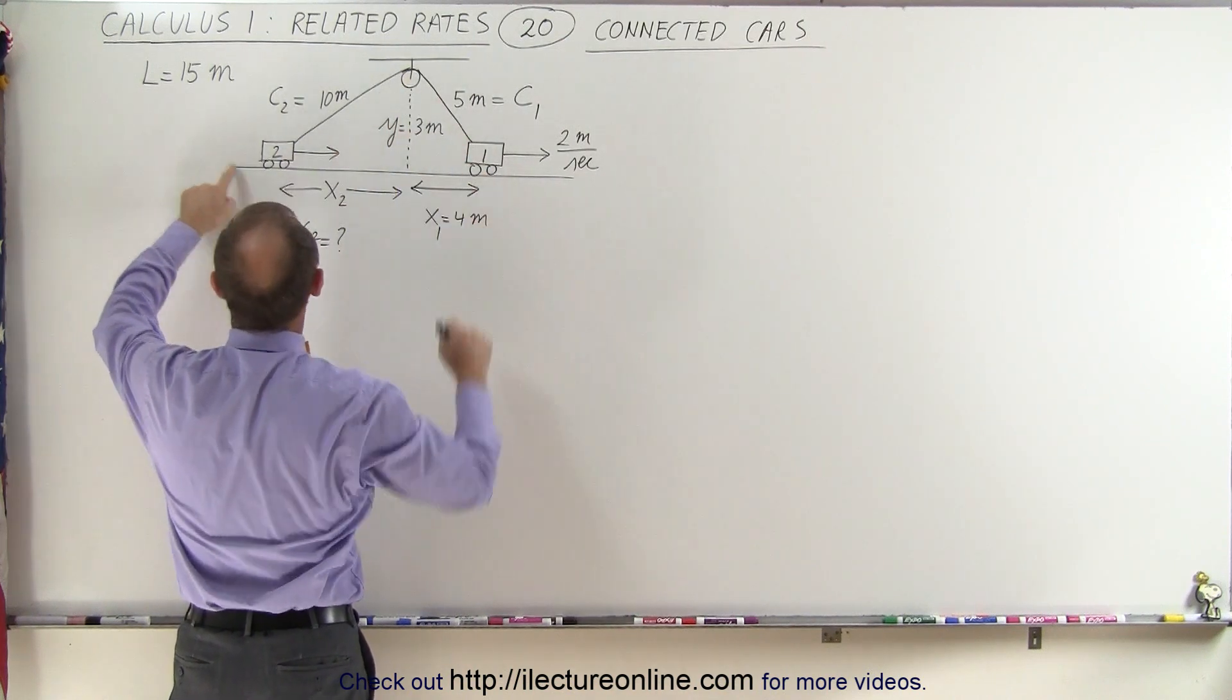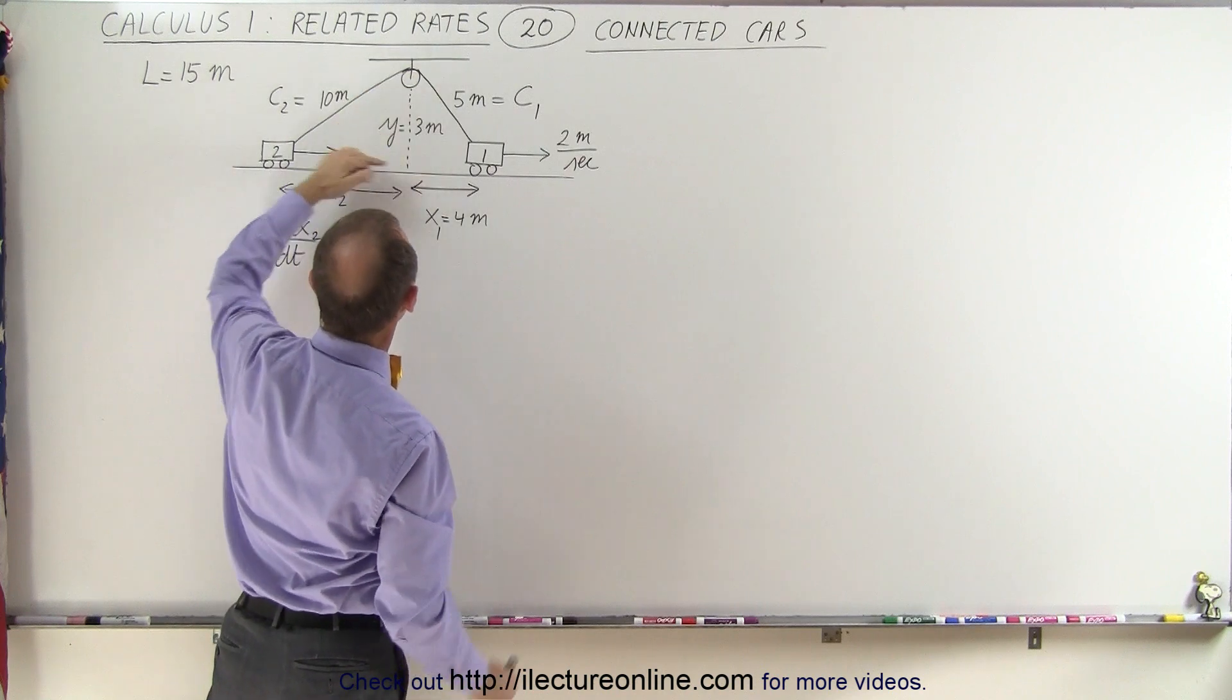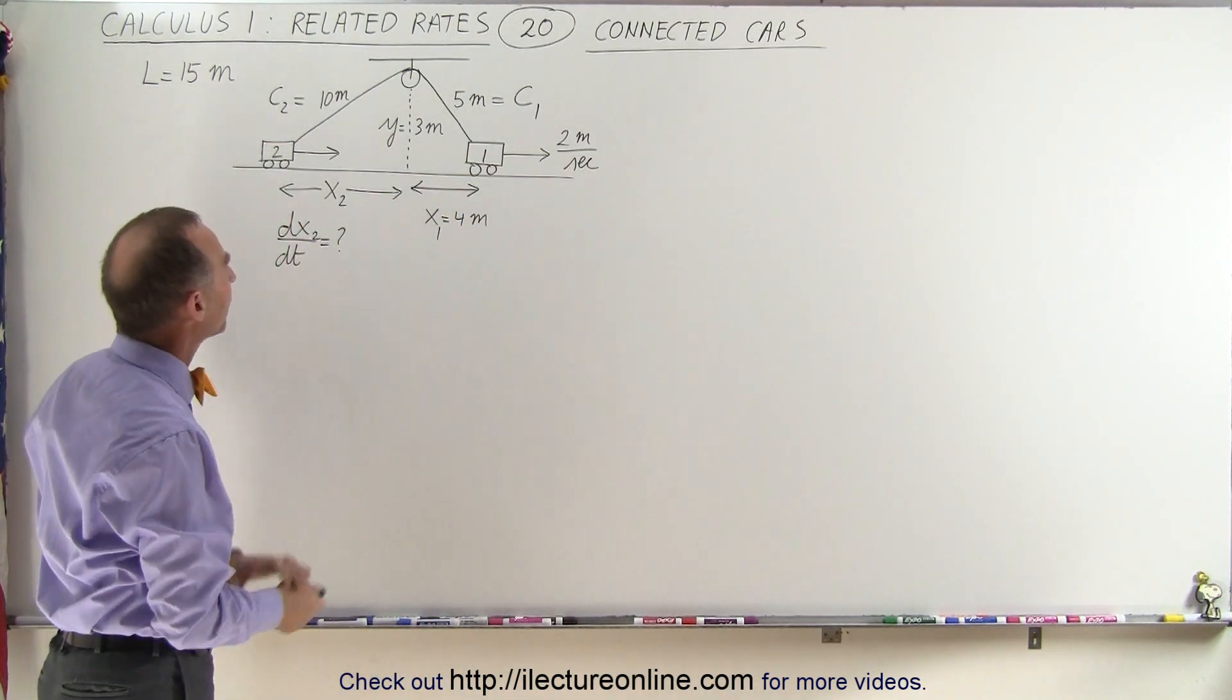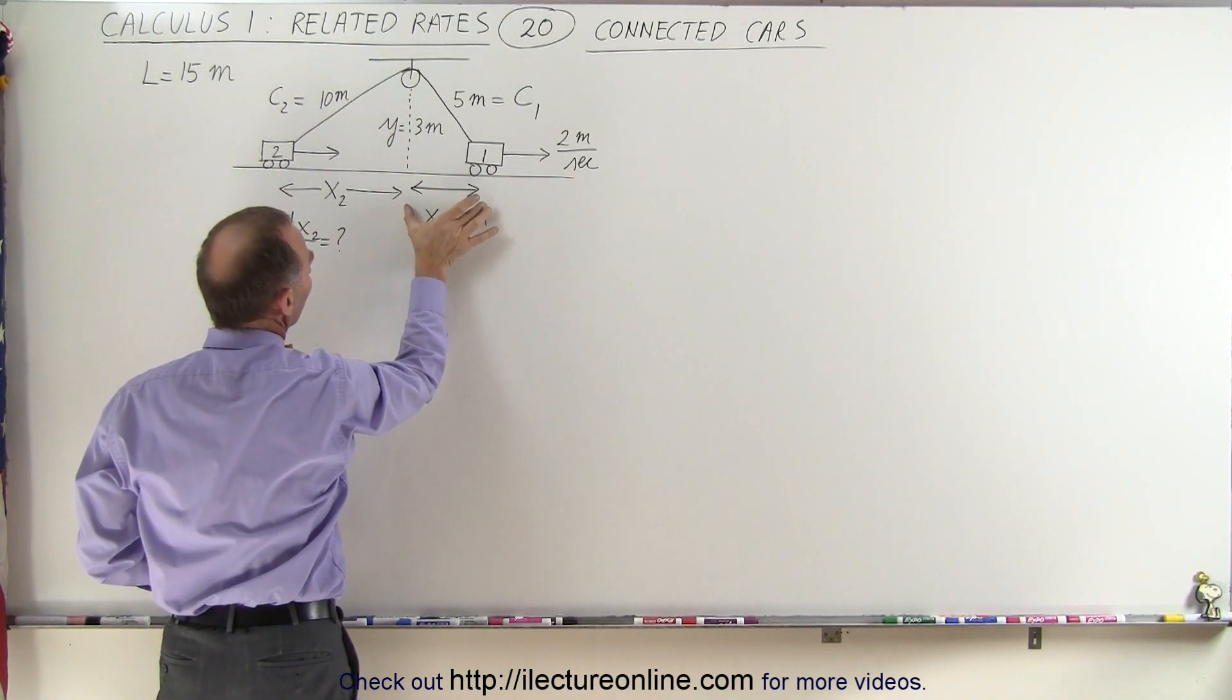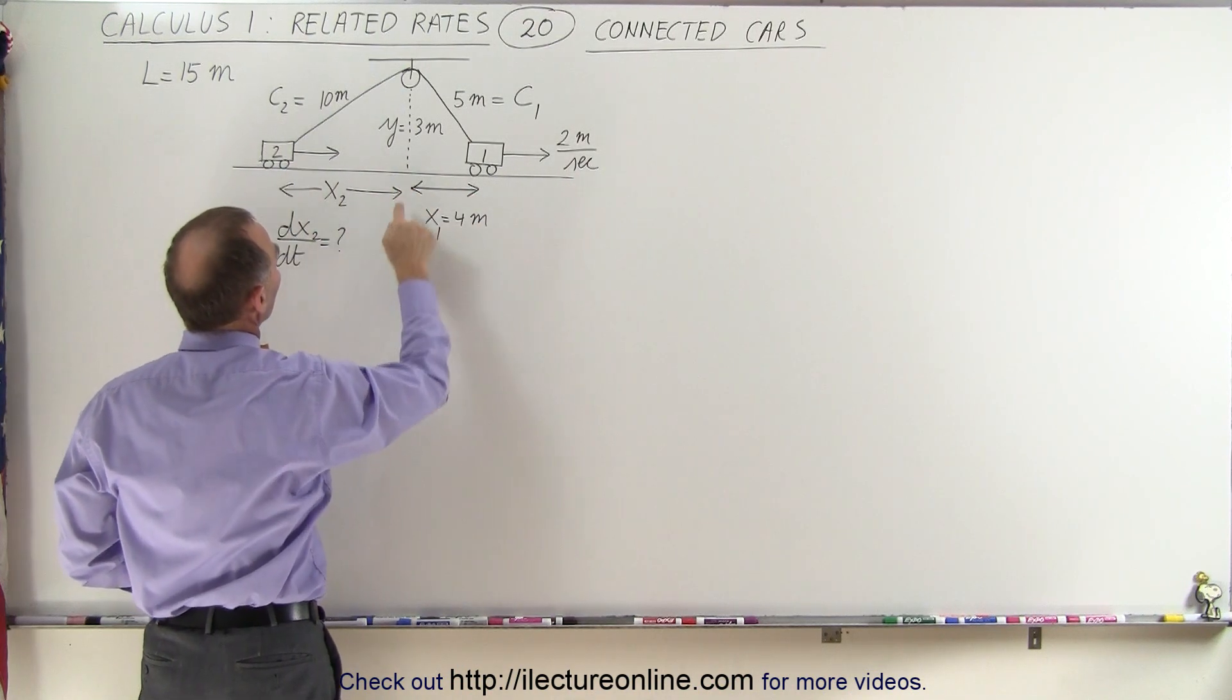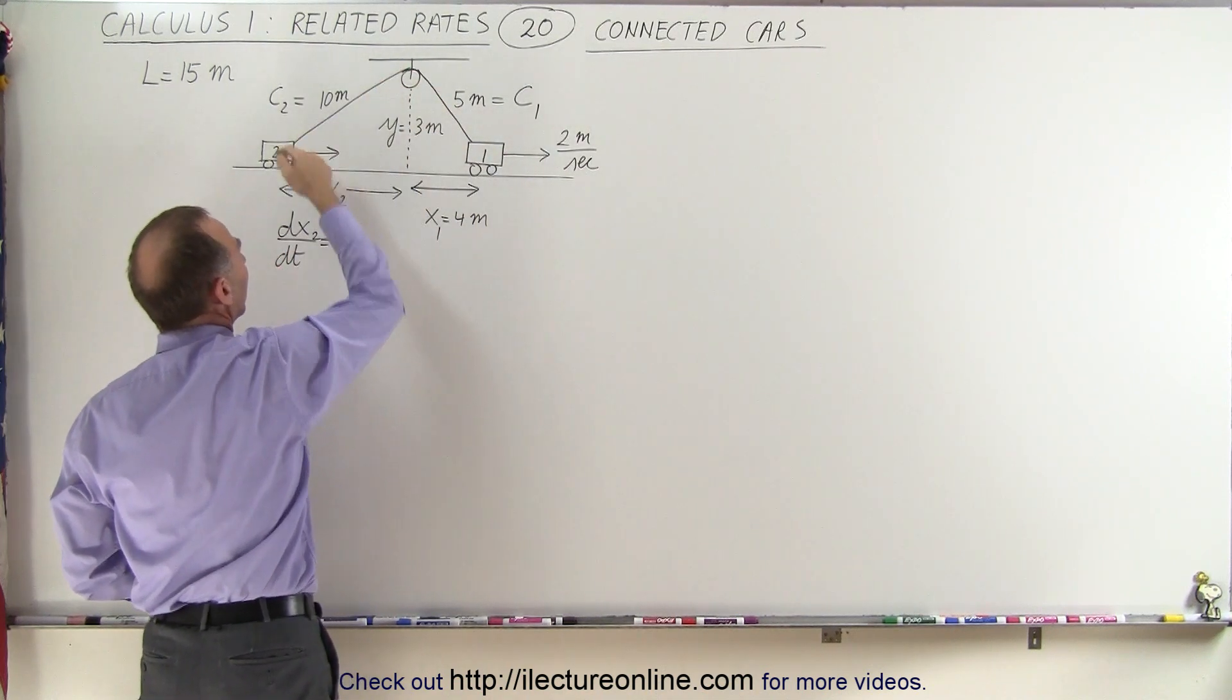They're connected by a single rope of length 15 meters over a pulley which is three meters above where the cars are attached to the rope. Notice that the distance from car one to the point directly below the pulley is four meters. We don't know the distance from there to the second car. We do know the height of the pulley is three meters and that this is five meters and that is ten meters.